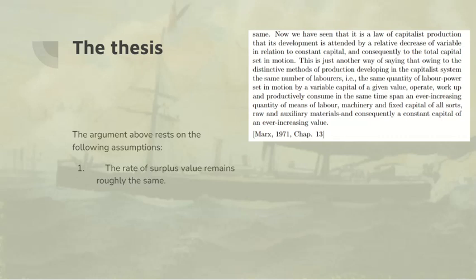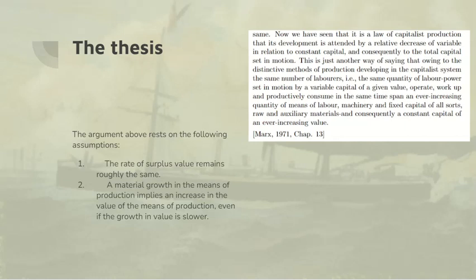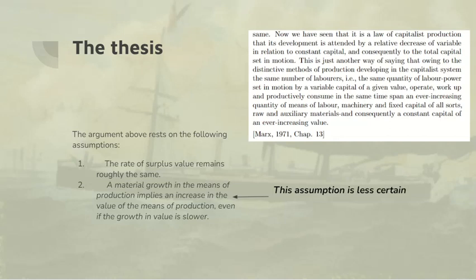This argument rests on the following assumptions. Firstly, that the rate of surplus value remains roughly the same over time. Secondly, a material growth in the means of production implies an increase in the value of the means of production, even if the growth of value is slower. The first assumption is fairly safe. The second assumption is less certain, and Marx makes provision for counteracting tendencies which may prevent it occurring.